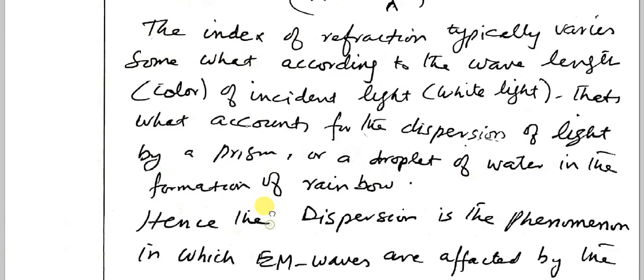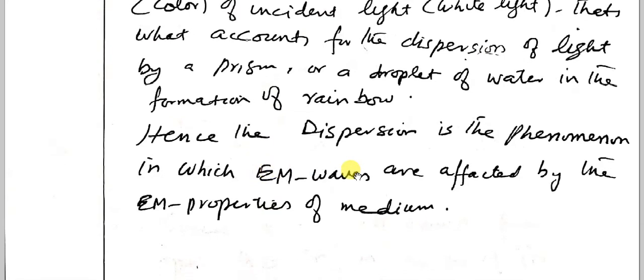Hence, dispersion is the phenomenon in which electromagnetic waves are affected by the electromagnetic properties of the medium, that is epsilon and mu, which are the electromagnetic properties of the medium.